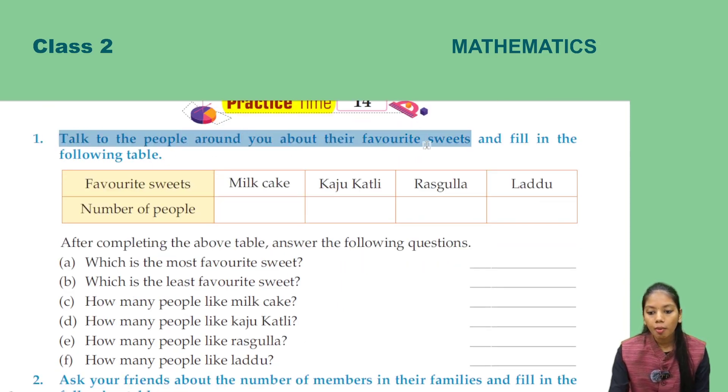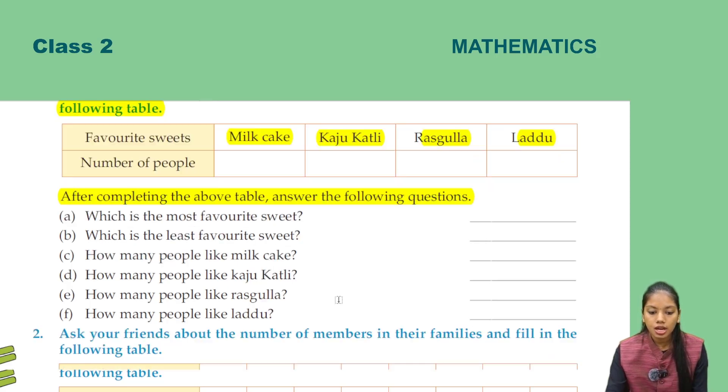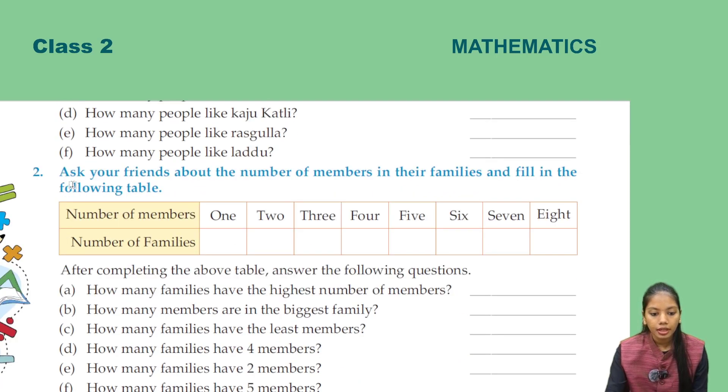Talk to the people around you about their favorite sweets and fill in the following table. You want to talk to the people around your neighborhood about their favorite sweets. Ask about milk cake, kaju katli, rasgulla, and laddu, and fill in the table accordingly.